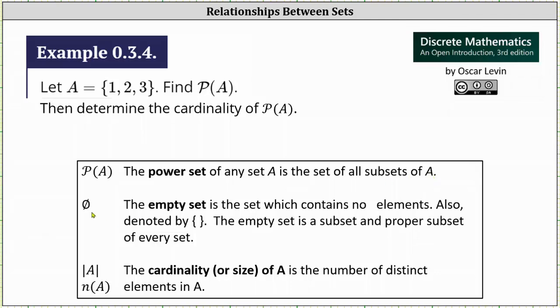Remember, the empty set is a subset as well as a proper subset of every set. And finally, the cardinality of a set is the number of distinct elements in the set.